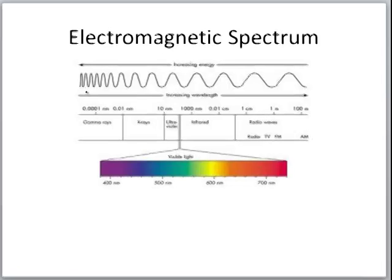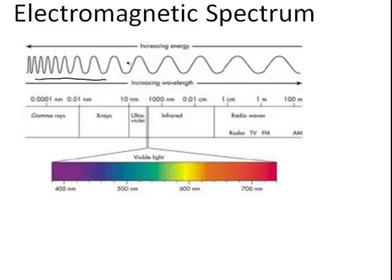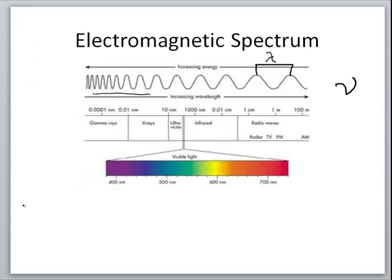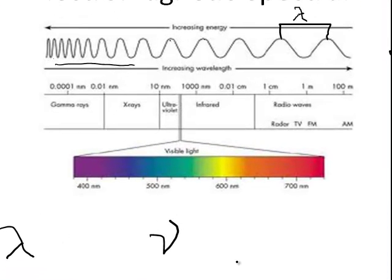First of all, light travels in waves, and those waves have characteristics. If we look at this end of the spectrum and measure from crest to crest, we refer to that as the wavelength, which gets the symbol lambda. If we measure how many crests pass a certain point every second, we measure what we call its frequency. The wavelength is the distance from crest to crest or trough to trough, and the frequency is how many crests pass a point as the wave moves.